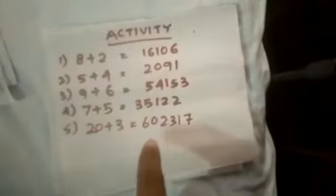The first two digits you can see, 16, that is 8 multiplied by 2 is 16. Next two digits is 8 plus 2 is 10, and the next digit, 6, is 8 minus 2 is 6. Like that, 20 multiplied by 3 is 60, 20 plus 3 is 23, and 20 minus 3 is 17.